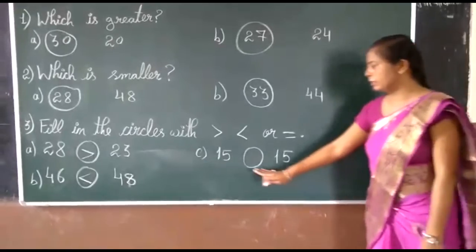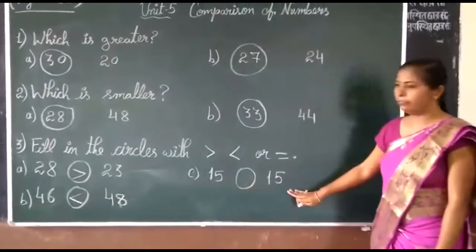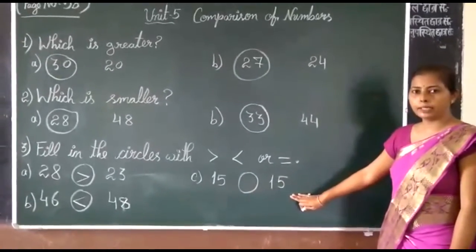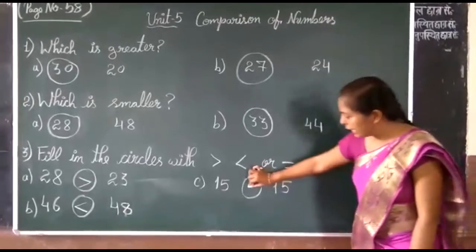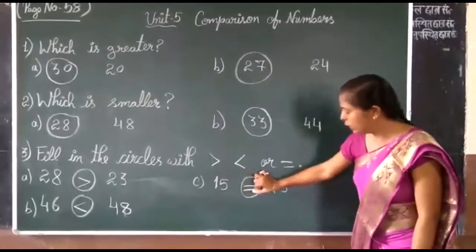Next is 15 and 15. Both numbers are the same and equal. So we write in the circle equal.